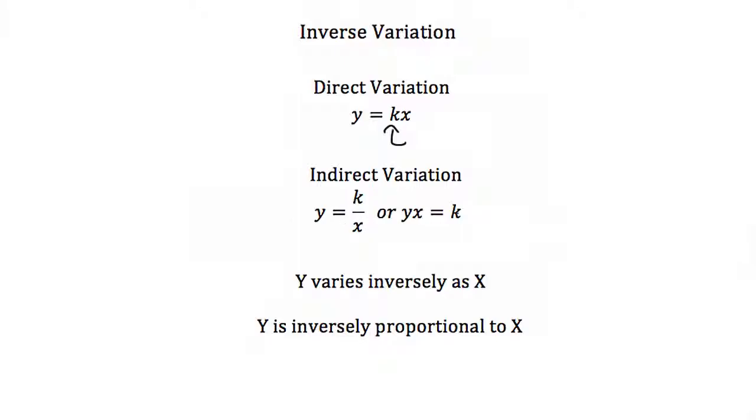If we move x over, this becomes y times x equals k. When we have an indirect variation problem, we're usually told that y varies inversely as x, or y is inversely proportional to x.